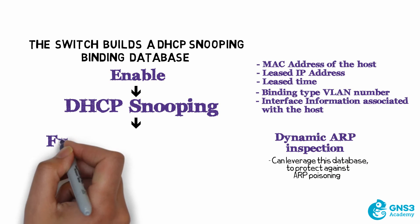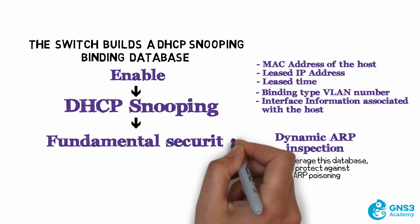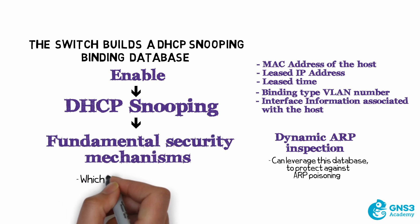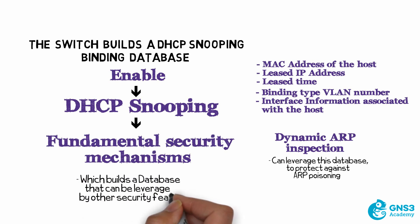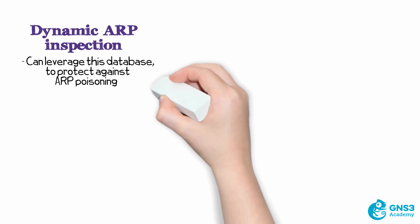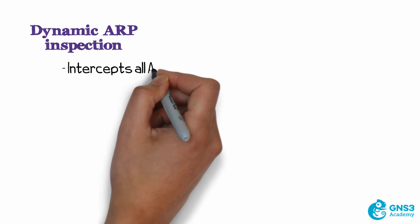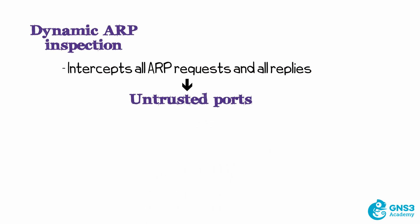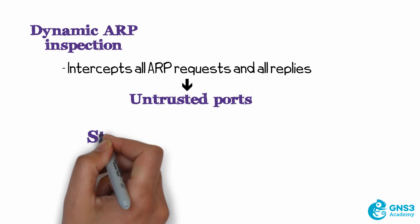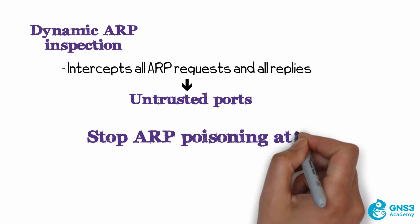DHCP snooping is one of the most fundamental security mechanisms to implement, as it builds a database that can be leveraged by other security features. Dynamic ARP Inspection intercepts all ARP requests and replies on untrusted ports and verifies those against a valid IP-to-MAC address binding, which is based on the database created by DHCP snooping. This allows you to stop ARP poisoning attacks.